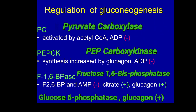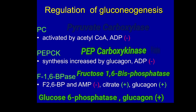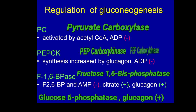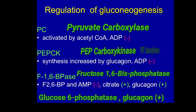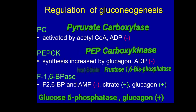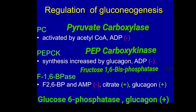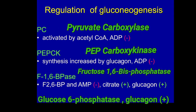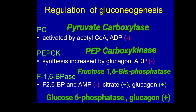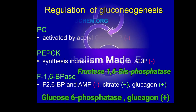Regarding regulation of gluconeogenesis: the first bypass enzyme, pyruvate carboxylase, is allosterically inhibited by ADP and activated by acetyl-CoA. The second, PEP carboxykinase, is inhibited by ADP and upregulated by glucagon. Fructose 1,6-bisphosphatase is inhibited by AMP and fructose 2,6-bisphosphate, and activated by citrate and upregulated by glucagon. Glucose 6-phosphatase, the fourth bypass enzyme, is also upregulated by glucagon.